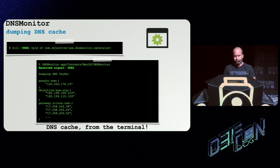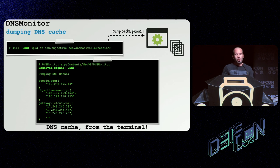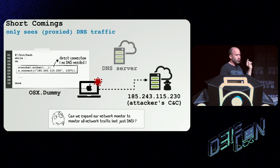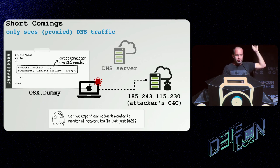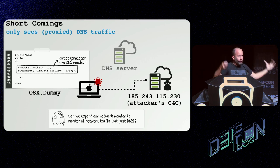The last feature of DNS Monitor is you can dump the cache — send a signal to the DNS monitor and it will dump all its records, all the domains and IP addresses for all the queries on the system. This is great as a DNS troubleshooting tool. However, there's one shortcoming: we're only going to see DNS traffic. If we look at Dummy, on line six it connects out to the attacker's command and control server using a hard-coded IP address — which means no DNS traffic, so we will not see any of Dummy's network traffic because it doesn't need to use DNS.